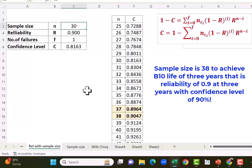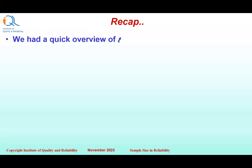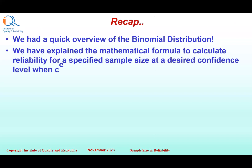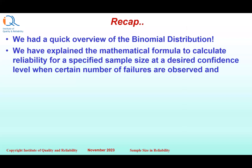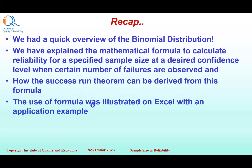Let us do a recap of the video. We had a quick overview of the binomial distribution. We explained the mathematical formula to calculate reliability for a specified sample size at a desired confidence level when a certain number of failures are observed, and how the Success Run Theorem can be derived from this formula. The use of the formula was illustrated on Microsoft Excel with an application example of an electric switch.